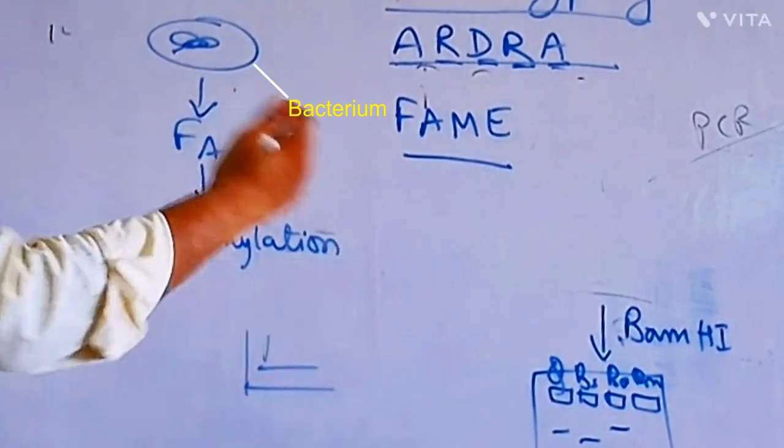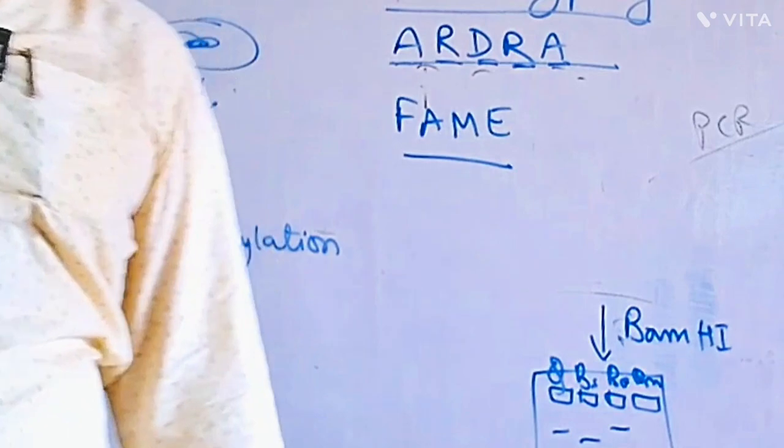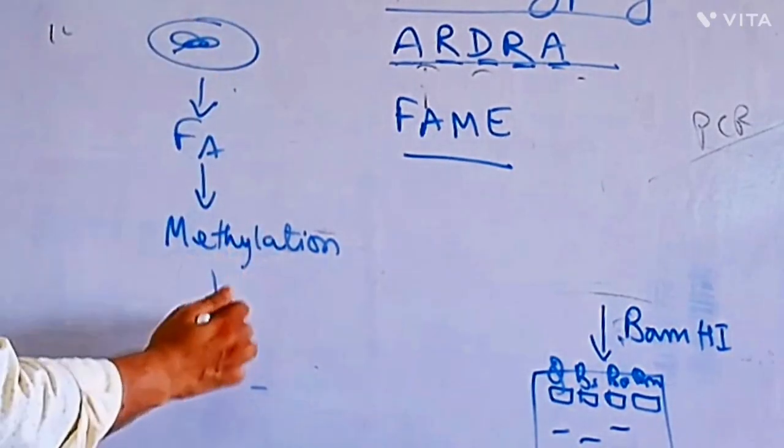Fatty acid go for methylation, so they will become methylated derivatives of fatty acids. Why do you methylate? To make them volatile, because fatty acids cannot be subjected to gas chromatography.